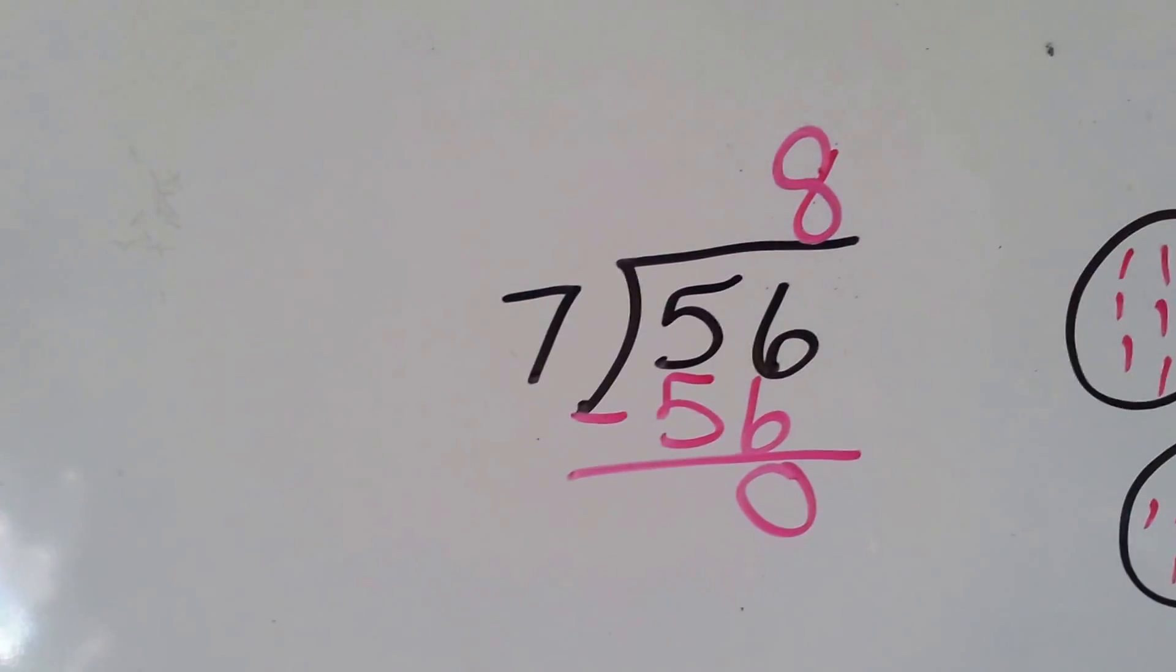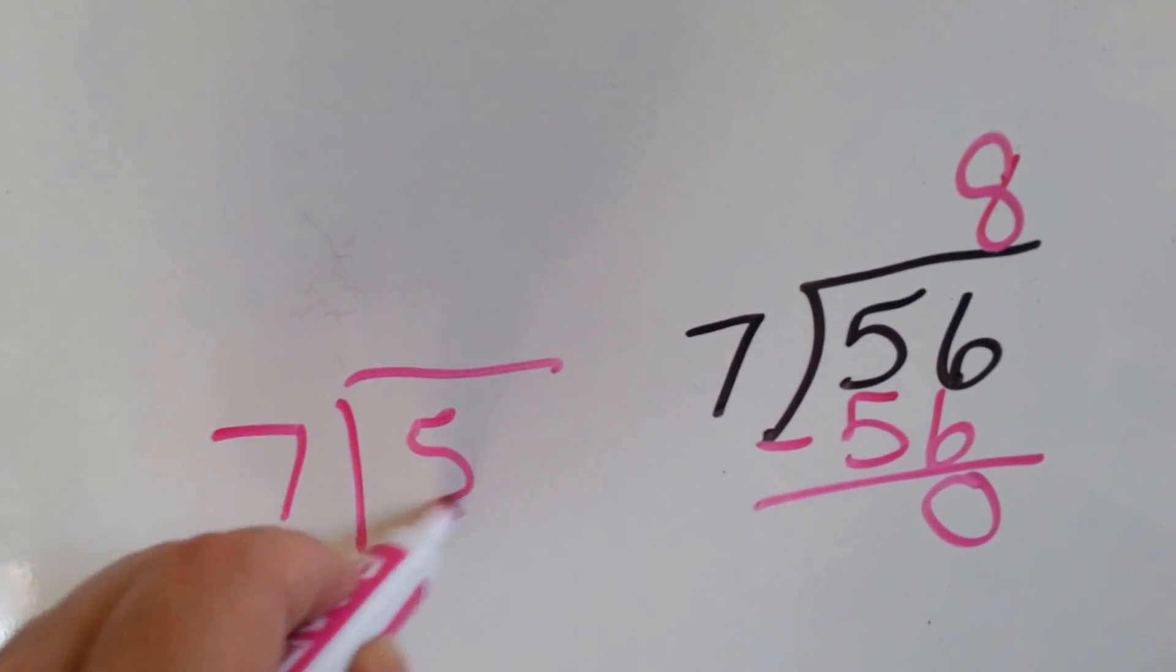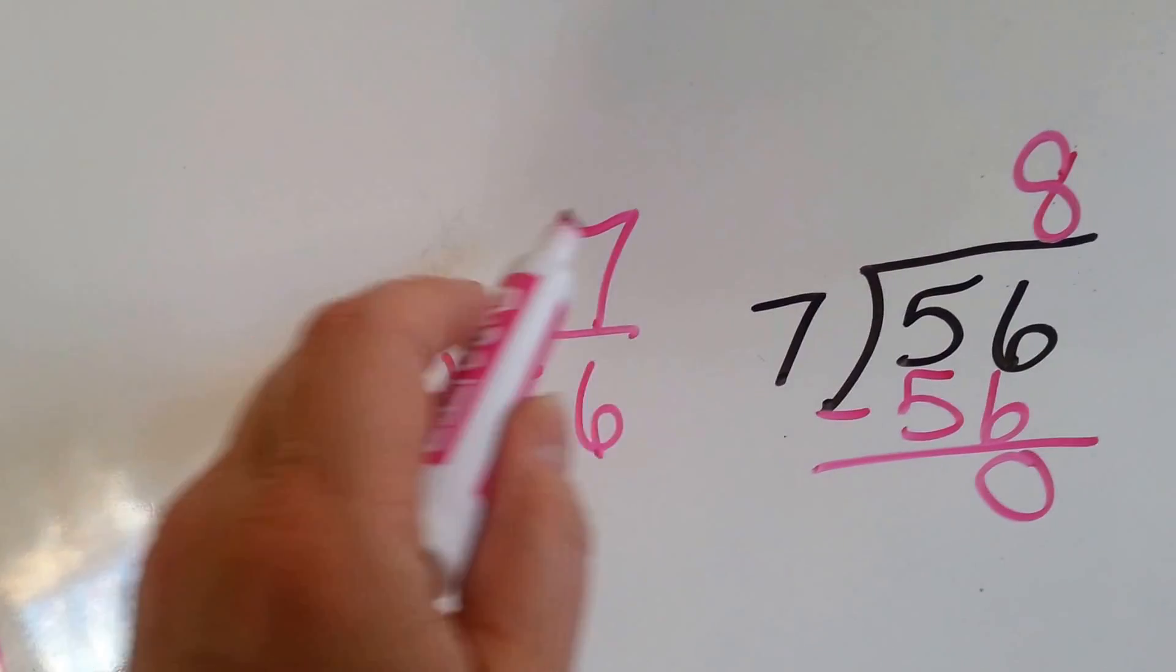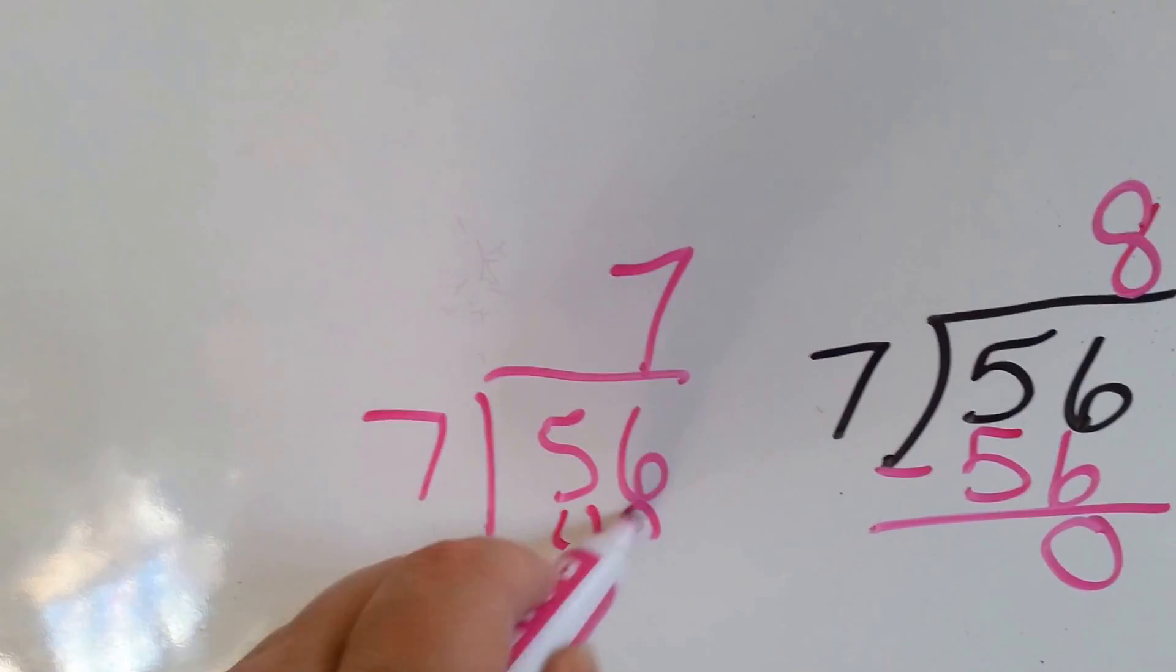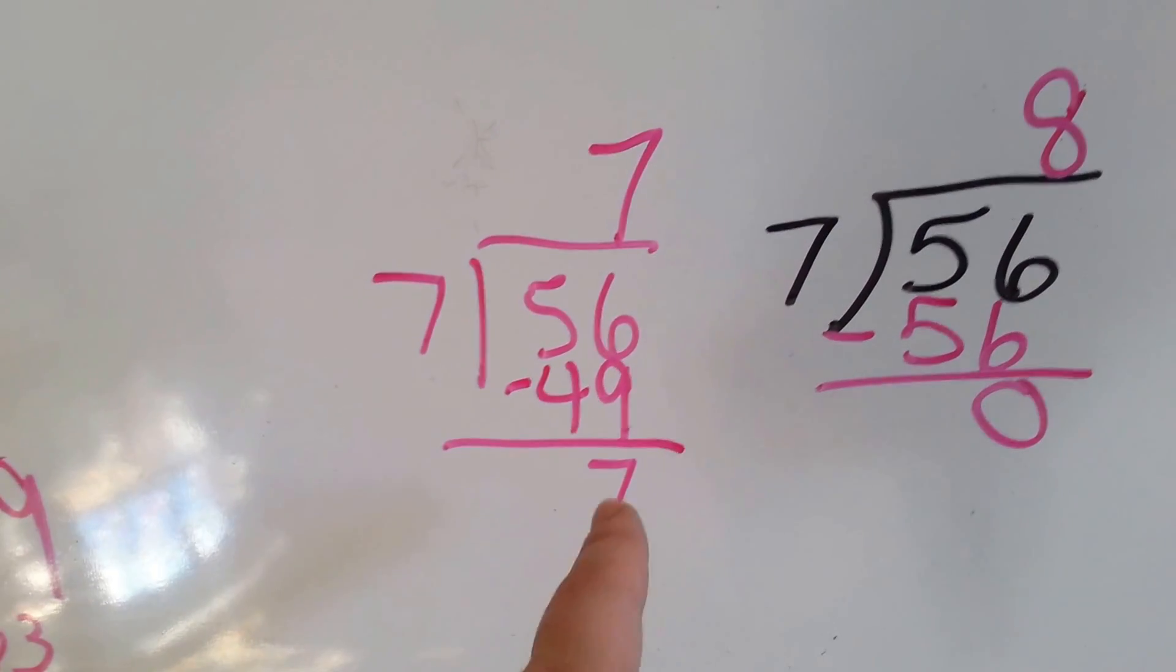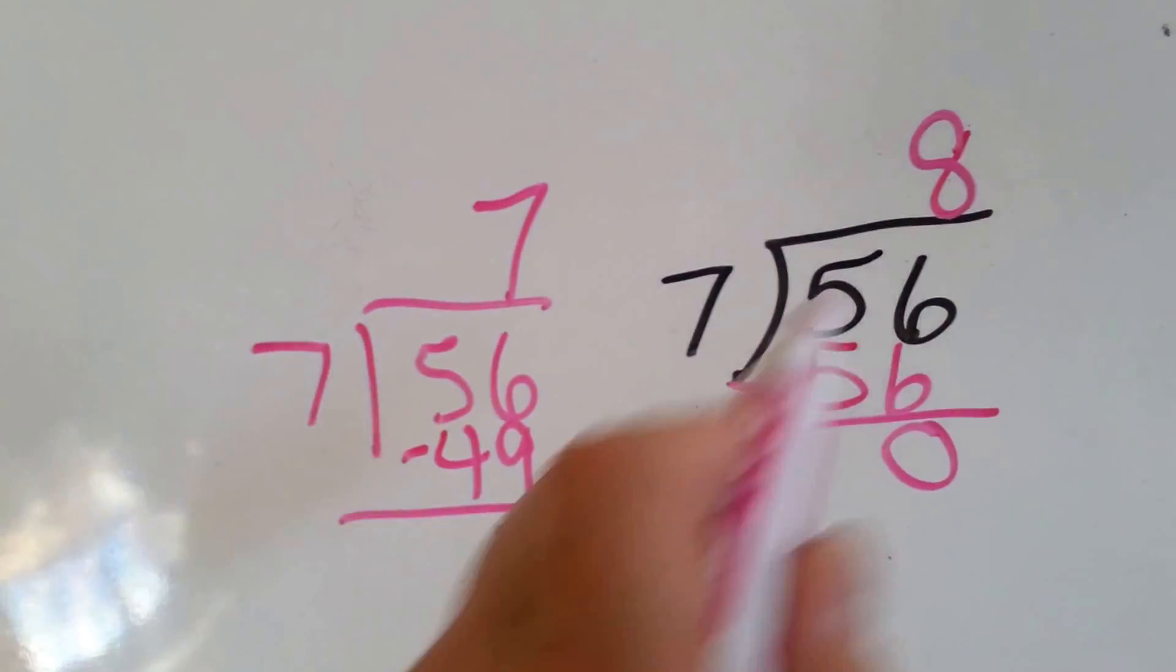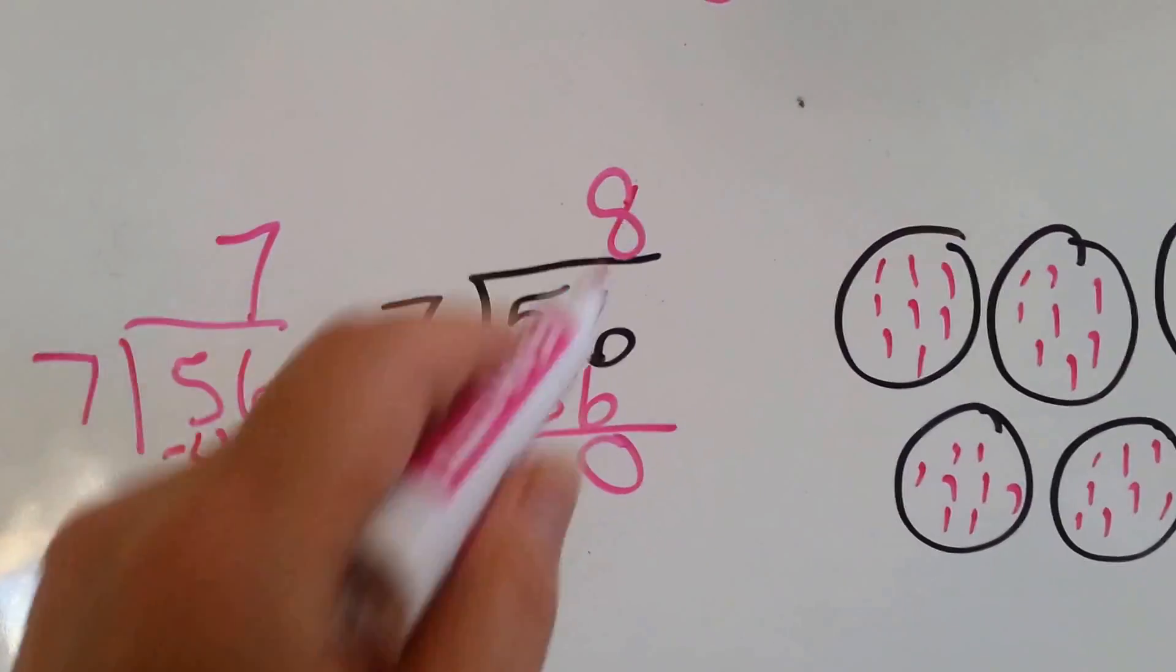Now, why do I keep saying we get a remainder of 0? Well, let's say we did 7 goes into 56. And we made the mistake and said, instead of 8, we said it was 7 times. We'd say, okay, 7 times 7 is 49. Okay. We would do our subtraction and we'd have 7 left over. By having 7 left over, that means we could have fit one more 7 in here. So, instead of that being there, it should have been an 8. Because one more would have fit in, see? That is why it's important to have a remainder of 0. We want to prove that we fit all of them in there that we could.